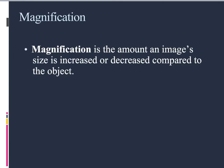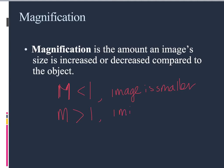Another concept is magnification, which is the amount an image size is increased or decreased compared to the object. We use capital M. If M is less than 1, the image is smaller than the object. If M is greater than 1, the image is bigger than the object.